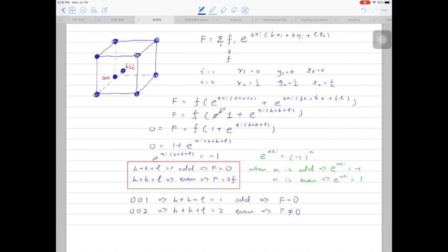Just one more example, if we are looking at 110 set of planes, then h plus k plus l is equal to 2, and this is also an even number. And f, the structure factor, is not equal to 0, and we can see those reflections.